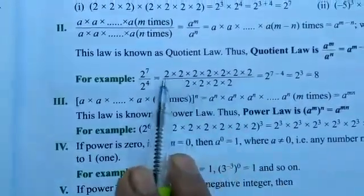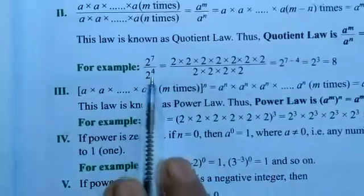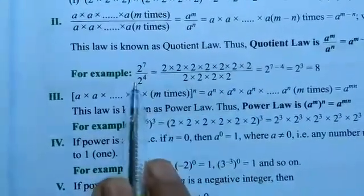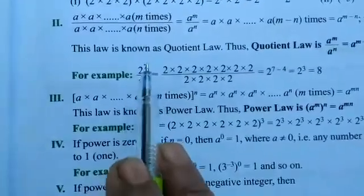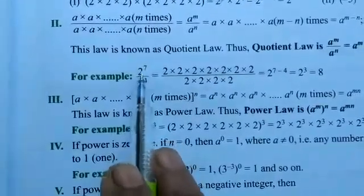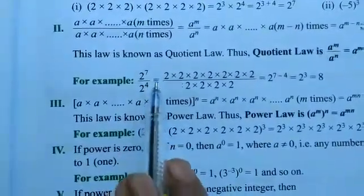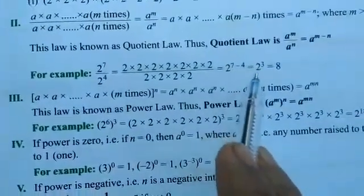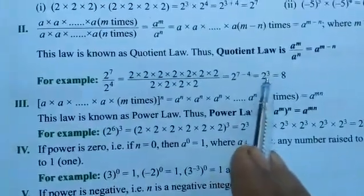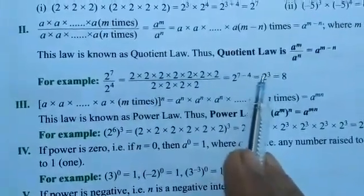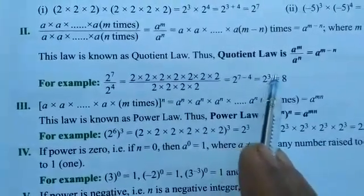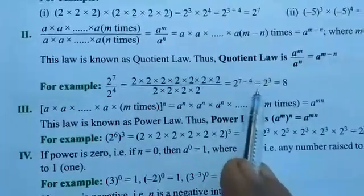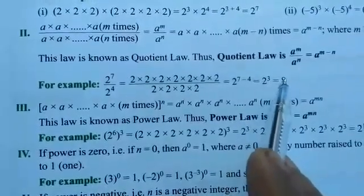For example, 2 raised to power 7 divided by 2 raised to power 4. It becomes 2 raised to power 7 minus 4, which is 2 raised to power 3. Now 2 raised to power 3 means 2 multiplied 3 times: 2 × 2 × 2. That gives us 4 × 2, which equals 8. So 8 is our answer.